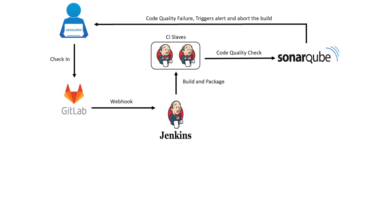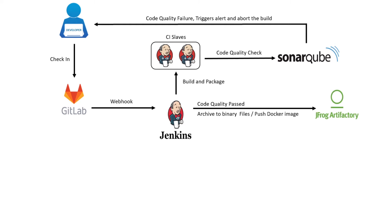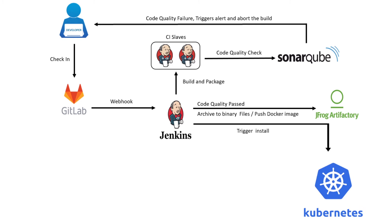Once the code meets the quality standard, the archived PHP Application Package will be pushed to the JFrog Artifactory Repository. The Docker image will be built and pushed to the JFrog Container Registry. In the final stage, Jenkins will deploy the application on Kubernetes using a deployment YAML from Git, which will perform the following tasks.